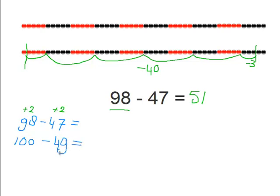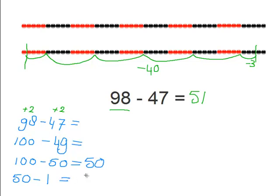Now again, let's round up forty-nine. So it's one hundred minus fifty equals fifty. And since we didn't subtract forty-nine but fifty, we need to add that one again. So fifty plus one equals fifty-one. The same answer as the other one.